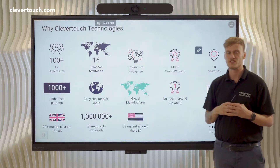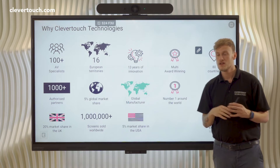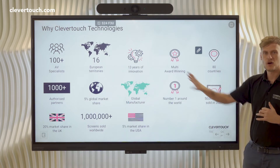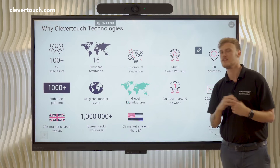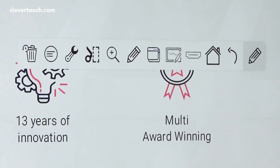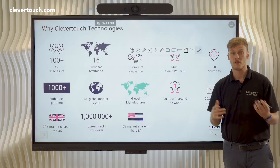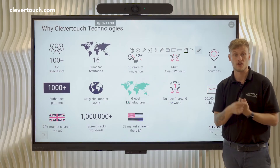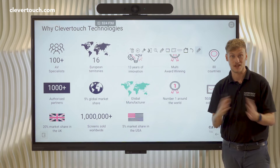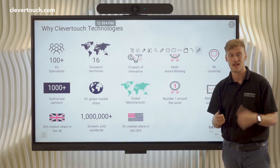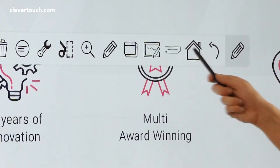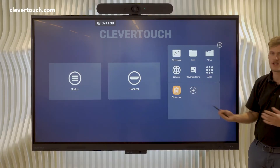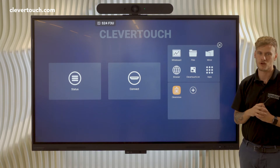A big thing with interactive screens is the user adoption. A lot of people will get into this kind of part of a screen and they'll get lost. We tried to make that as easy as possible. Using our floating toolbar, we've added a simple home button — I refer to this as the button we used to have on an iPhone or a Samsung, that if we ever got lost, we'd press the button and we'd go straight to the home screen. We've kept this familiar, added this function in — press the home button and it will take us back to the home screen.